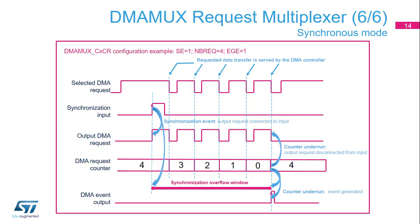When the DMA MUX channel is configured in synchronous mode, a pending request multiplexer input will not be forwarded on the output until the synchronization event is received. Then the multiplexer connects its input and output, and all peripheral requests are forwarded. Each forwarded and granted DMA request decrements the request counter. When the counter reaches zero, the connection between the DMA controller and the peripheral is cut, waiting for a new synchronization event. At each counter underrun, the request multiplexer can generate an optional event to synchronize or trigger a second DMA MUX request multiplexer channel. The same event can be used in low-power scenarios to switch the system back to stop mode without CPU intervention.